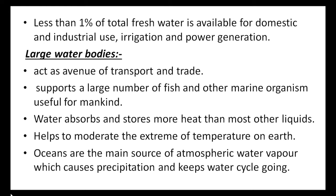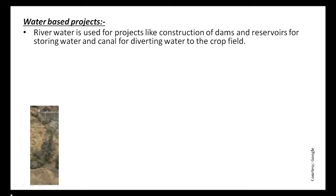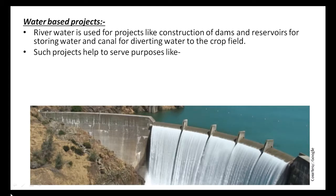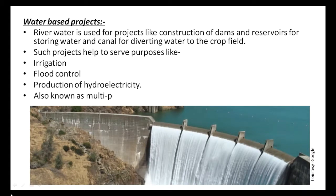Oceans are the main source of atmospheric water vapor, which causes precipitation and keeps the water cycle going. River water is used for projects like construction of dams and reservoirs for storing water, and canals for diverting water to crop fields. Such projects help water serve purposes like irrigation, flood control, and production of hydroelectricity. These projects are also known as multi-purpose river valley projects.